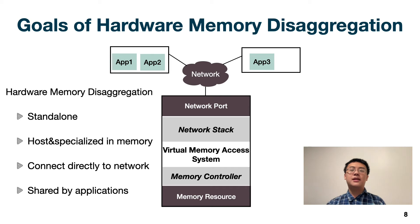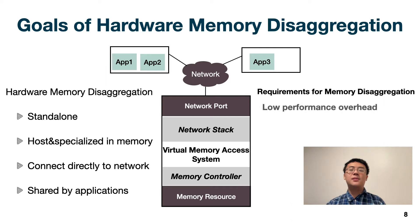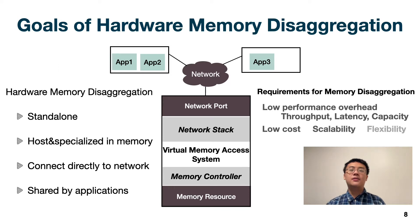Let's answer this question by examining server-based solutions in a disaggregated environment. In a real hardware memory disaggregation setup, a memory pool would contain standalone memory nodes that connect directly to the network and offer shared memory access to multiple clients. Based on this use case, we have the following requirements: first, it should have similar performance as raw memory resources, with throughput satisfying network line rate and low, stable latency, plus large memory capacity. Second, it should remain low extra cost on top of raw memory resources. Third, it should have good scalability on both hosted memory sizes and number of connected clients. Last, it should be flexible to support different use cases.